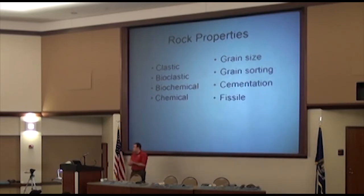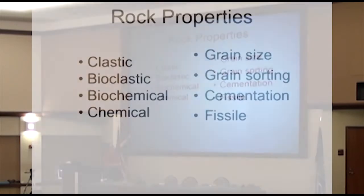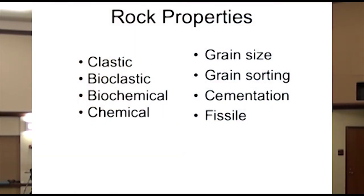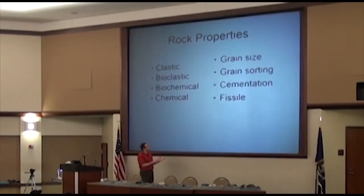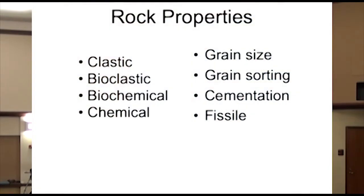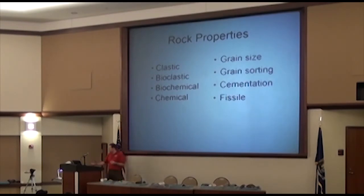Just like last week with igneous rocks, we talked about phaneritic and vesicles and other cool terms — we're going to talk about different terms for sedimentary rocks. We'll talk about what they're made of: clastic, bioclastic, biochemical, and chemical. Then we'll talk about what they look like: grain size, whether grains are sorted or not, how they were stuck together (cementation), and whether they're fissile or not.